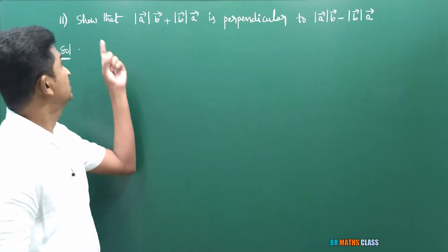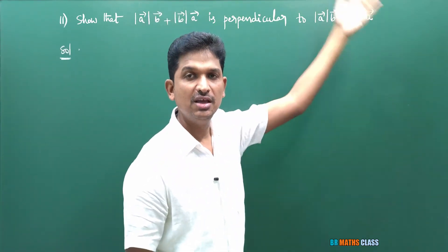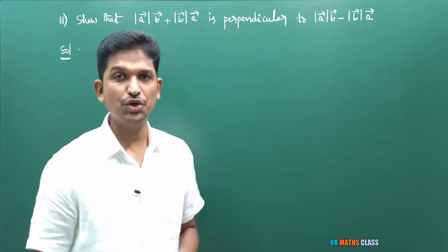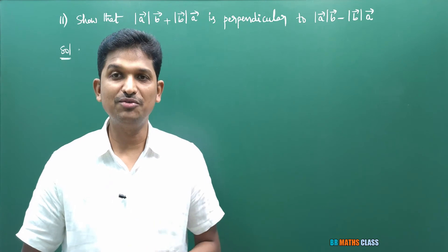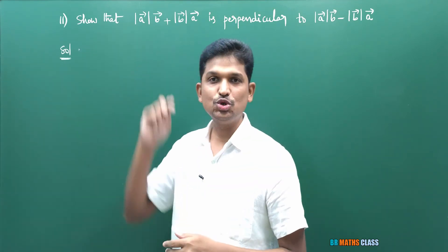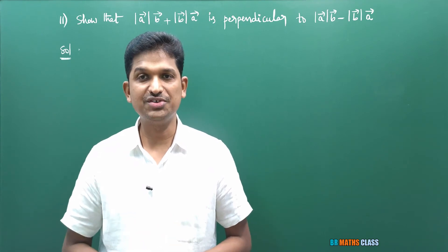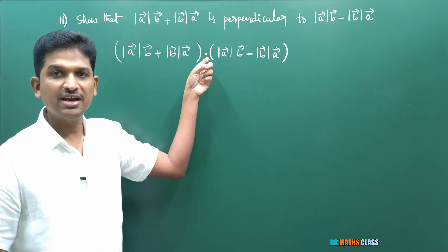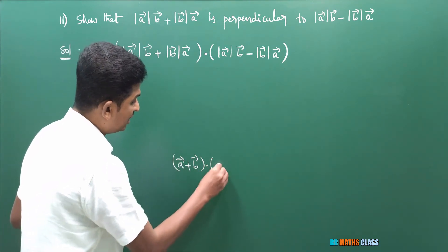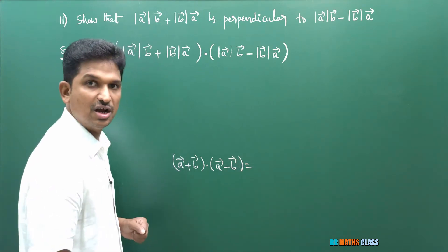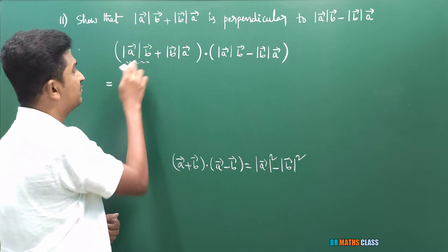We will move to question number 11. They are asking to show that one vector is perpendicular to another, where a̅ and b̅ are two non-zero vectors. To prove two vectors are perpendicular, we will prove that their dot product is zero. I will calculate their dot product — if the answer is zero, they are perpendicular.